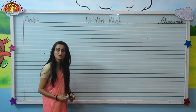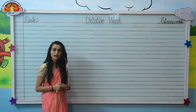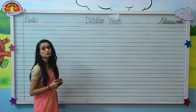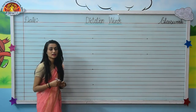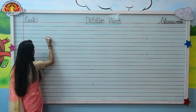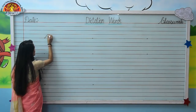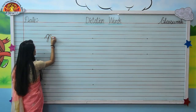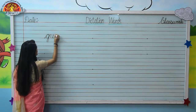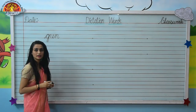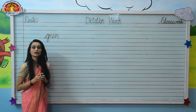Your first word is gun. G-U-N, gun. So write down: G-U-N, gun.